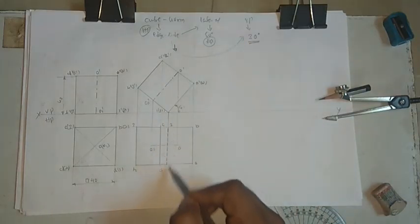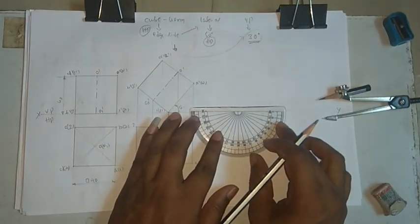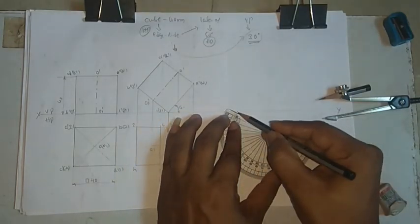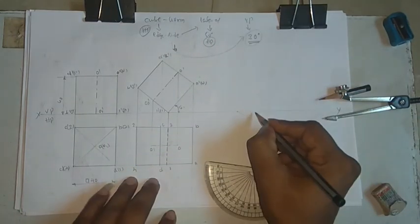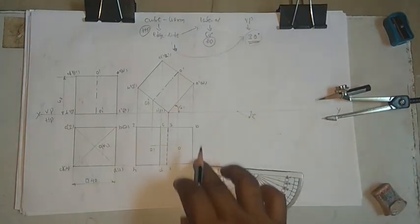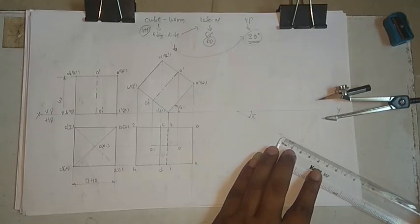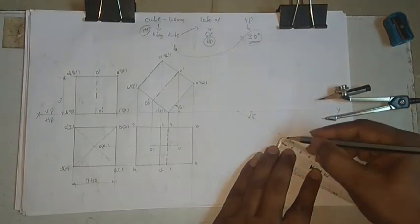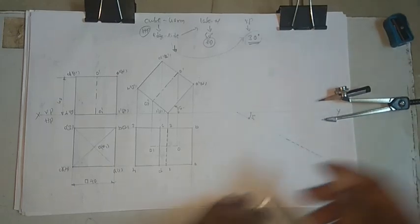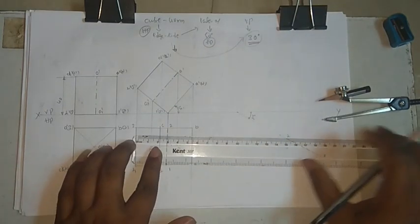Now the same resting edge 1-2 is inclined at 30 degrees to the VP. Take a point and draw a 30-degree line. This should be written carefully. We already know it is 40mm, so take it a little bit down so it doesn't intersect the XY line. Mark this as point 1 and point 2 on the 30-degree line.